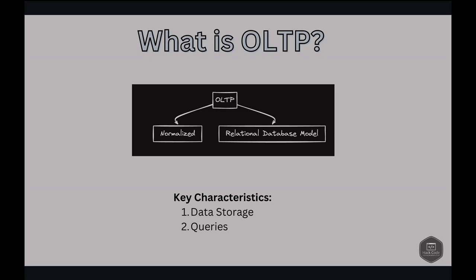Next is queries. OLTP queries are optimized for fast, real-time processing. The queries involve fewer data points and usually target individual records. The usage covers day-to-day operations of an organization — for example, online banking, order processing, and inventory control.